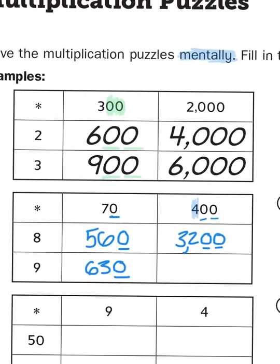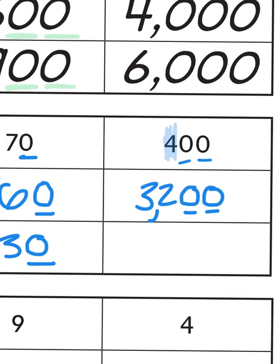And then finally, 9 times 4, what we know is 36. So 9 times 4 with two zeros is going to give me 36 with two zeros, or 3,600.